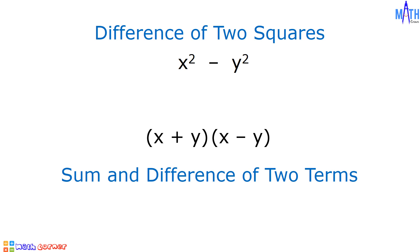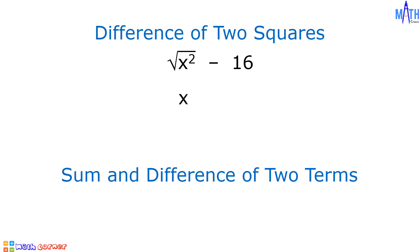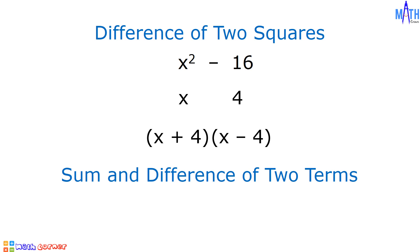Let us consider another example. Let us factor x squared minus 16. Then we have x plus 4 times x minus 4. It means that x squared minus 16 is equal to x plus 4 times x minus 4.